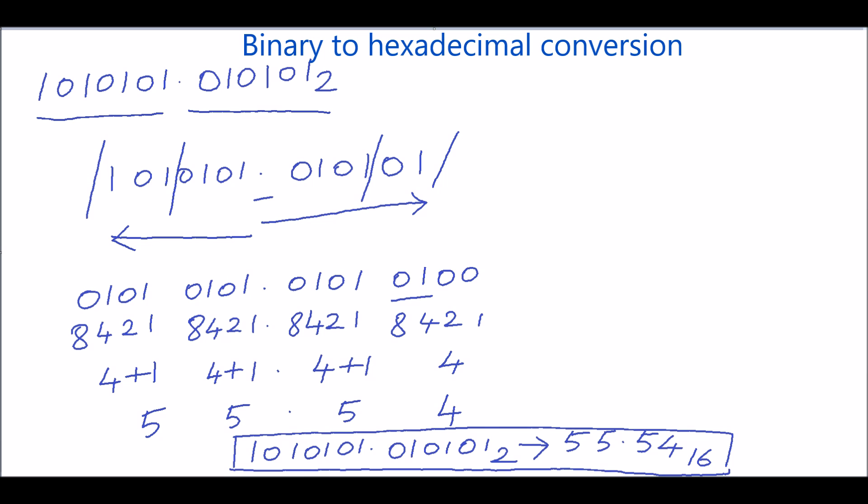Binary to hexadecimal conversion is very simple. The key steps are: break the given binary number into groups of four digits, and convert each group into its equivalent hexadecimal number. Hope you understand this concept — thank you.